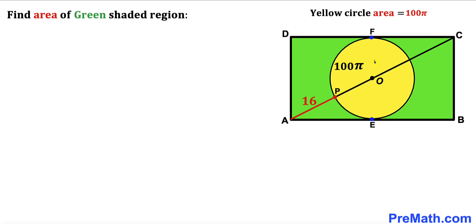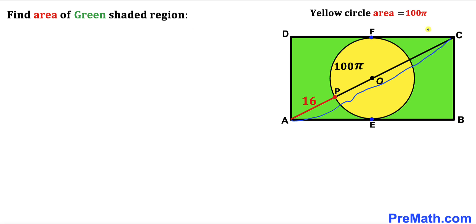In this video we have a yellow circle with center O fully confined in a rectangle ABCD, such that the area of the yellow circle is 100π. E and F are the points of tangency, AC is the diagonal that passes through center O, and segment AP is 16. Our task is to calculate the area of the green shaded region.